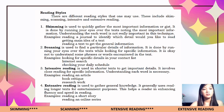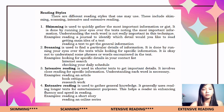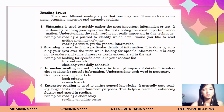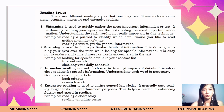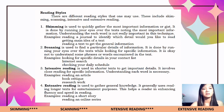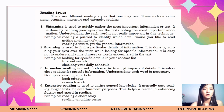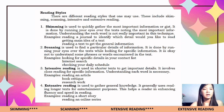Number two: scanning. This is used to find particular details or specific information. It is done by running your eyes over the text while looking for specific information. It is okay not to understand some phrases or words encountered in the text. Examples include looking for specific details in a contact list, internet searching, and checking your daily schedule. Both skimming and scanning involve running your eyes over the text — skimming notes the most important information, while scanning looks for a particular specific piece of information.